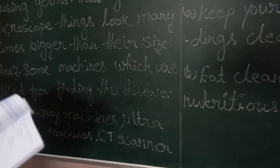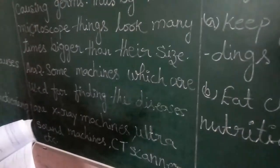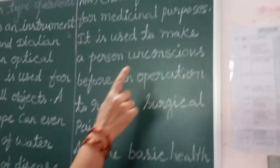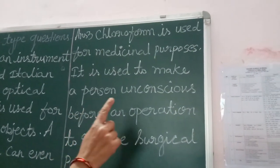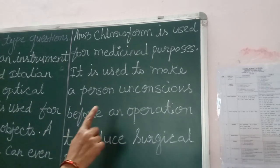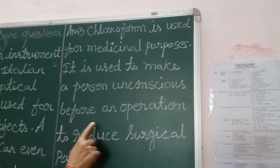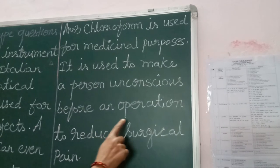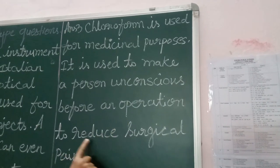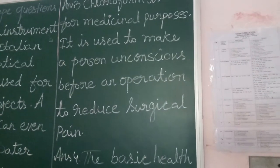Question number 3: What is chloroform used for? Answer: Chloroform is used for medicinal purposes. It is used to make a person unconscious before an operation to reduce surgical pain.